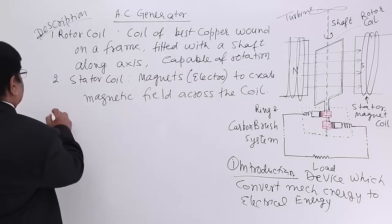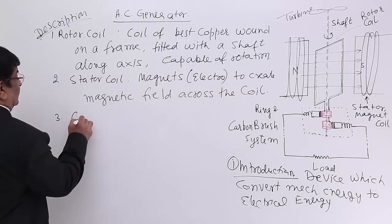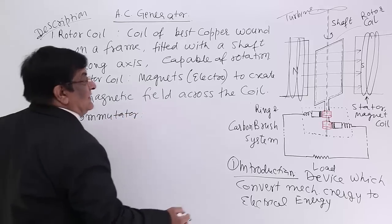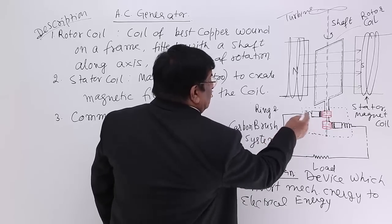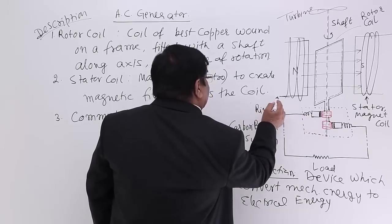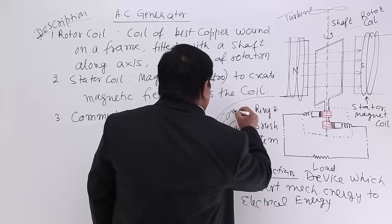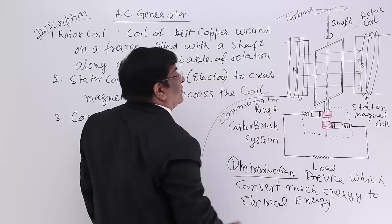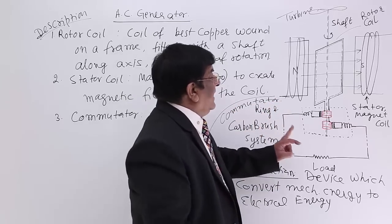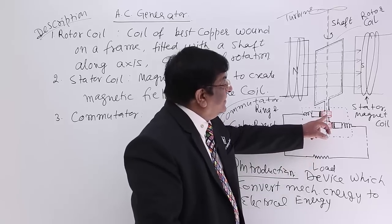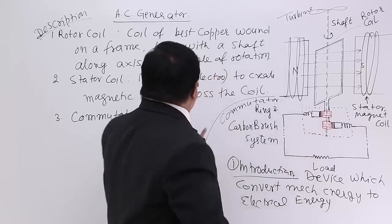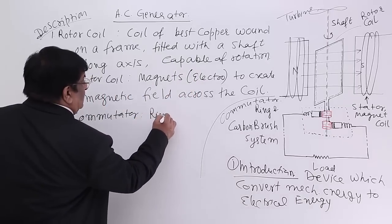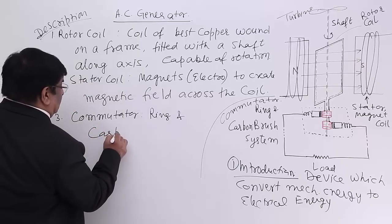The third component is the commutator — this ring and carbon brush system is known as the commutator. 'Commute' means sending one thing to another. The commutator sends electrons from the ring to the carbon brush. So the commutator is the ring and carbon brush system.